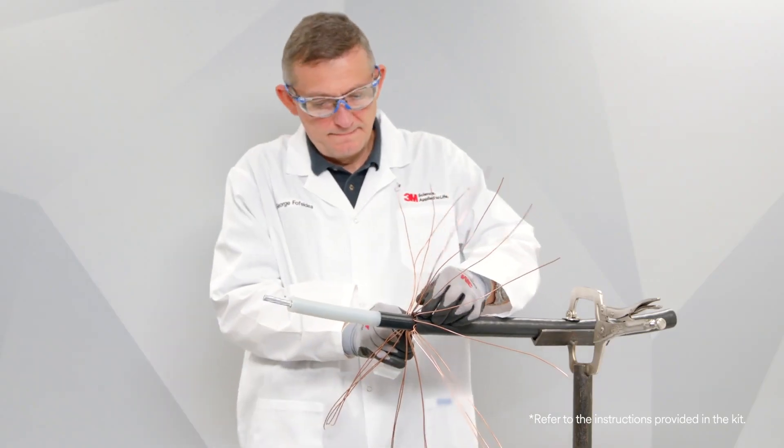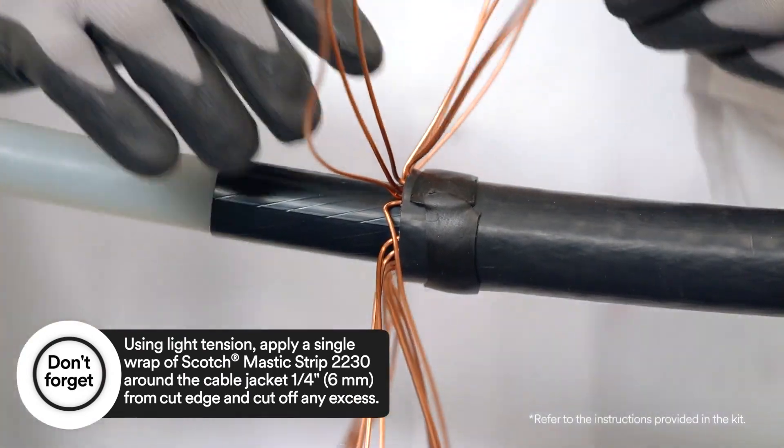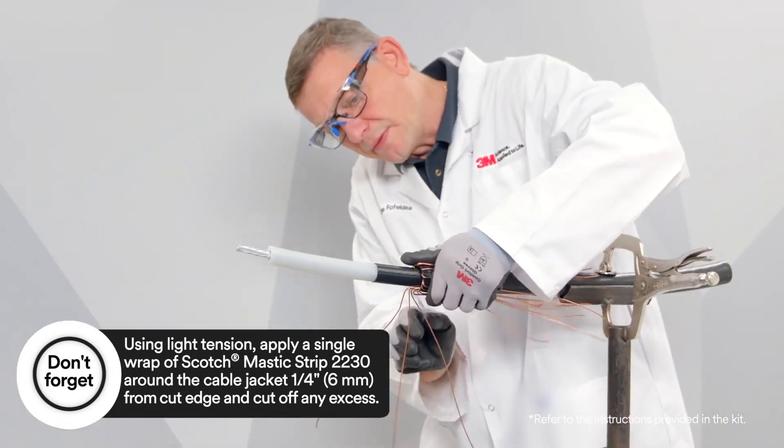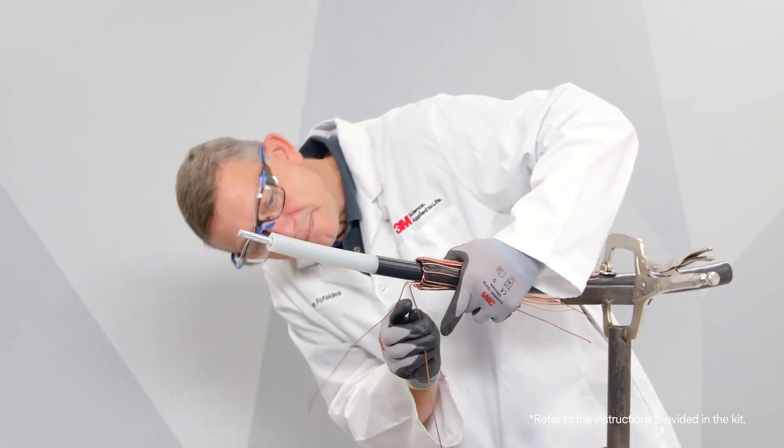After you've applied Scotch Mastic Strip 2230, bend the neutral wires back over the applied sealing mastic. Make sure all concentric neutral wires that are bent back are equally spaced and do not cross each other.